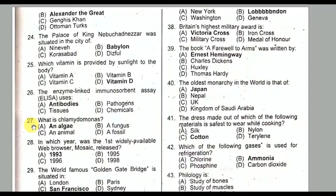Question number twenty-seven: What is Chlamydomonas? Option A — Algae — is the correct option. Question number twenty-eight: